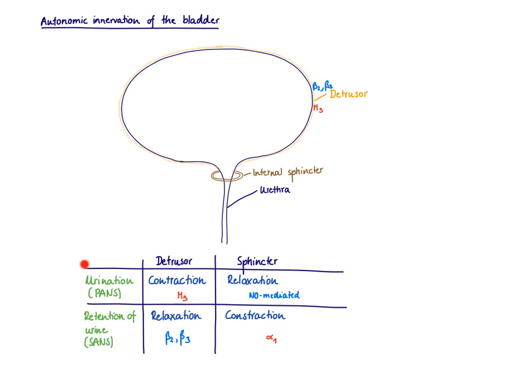So let's continue with the parasympathetic nervous system. We know we want to void when we are under rest and digest. The detrusor needs to contract, so the distance needs to get smaller in order to get the urine out.